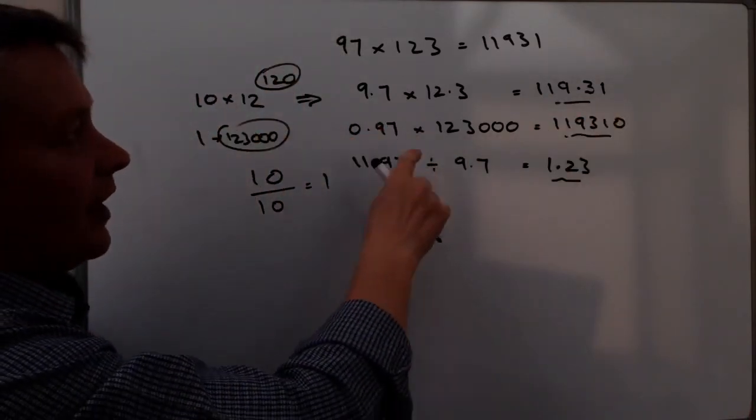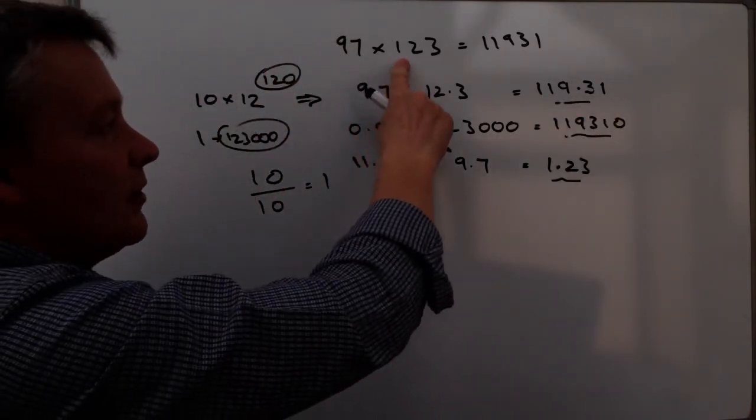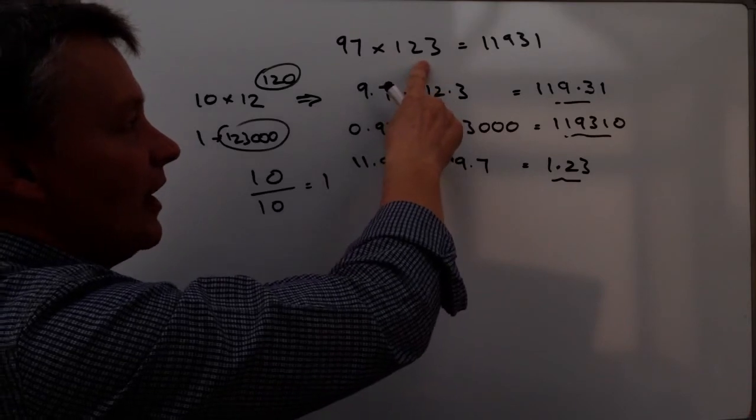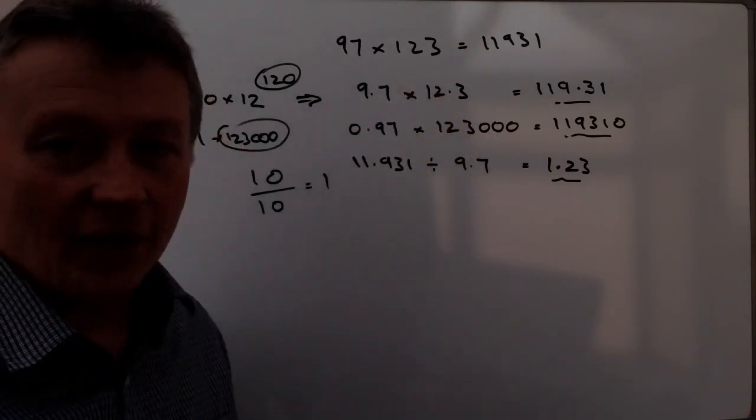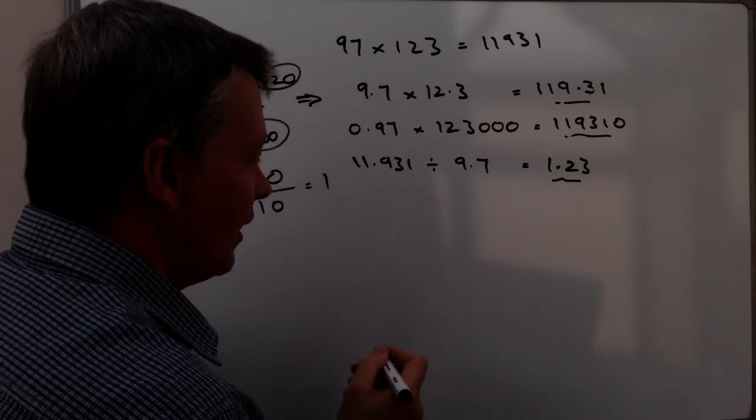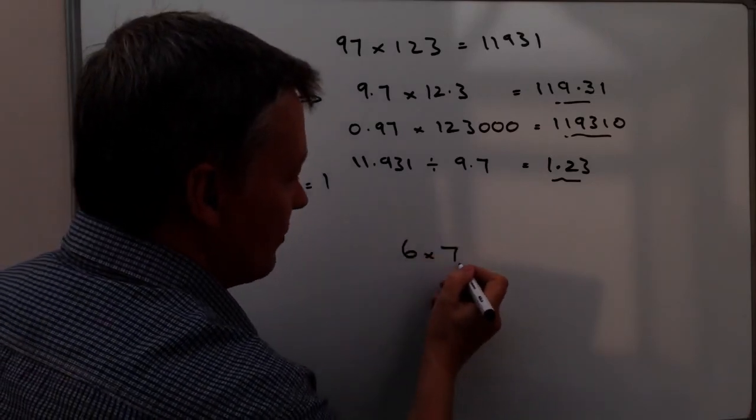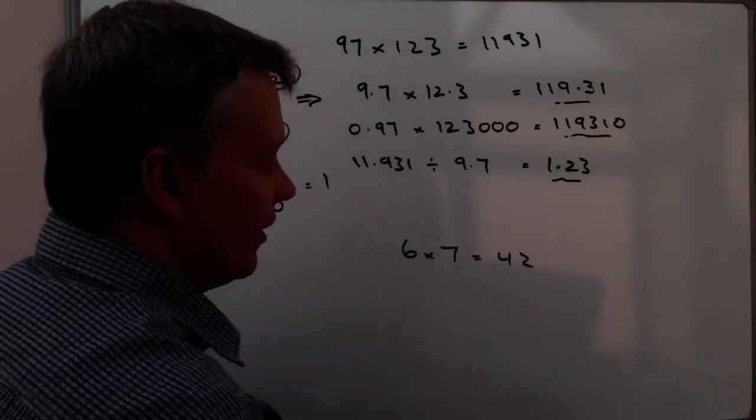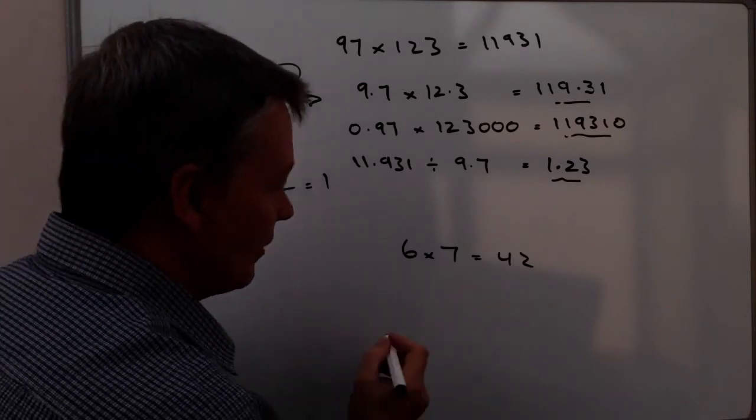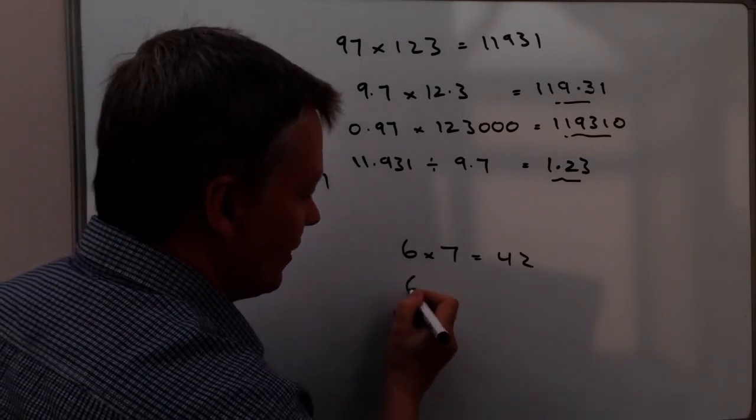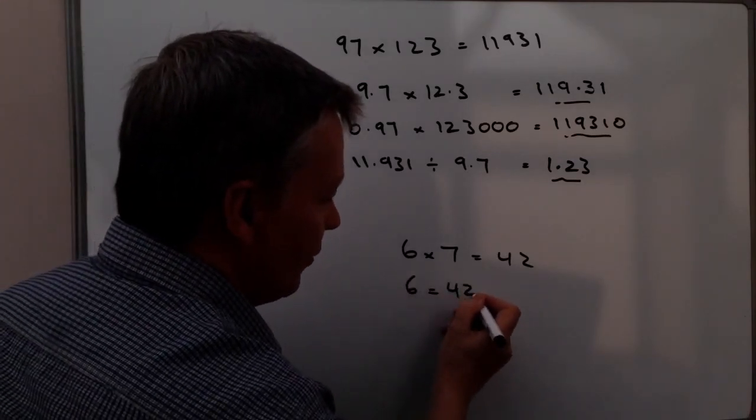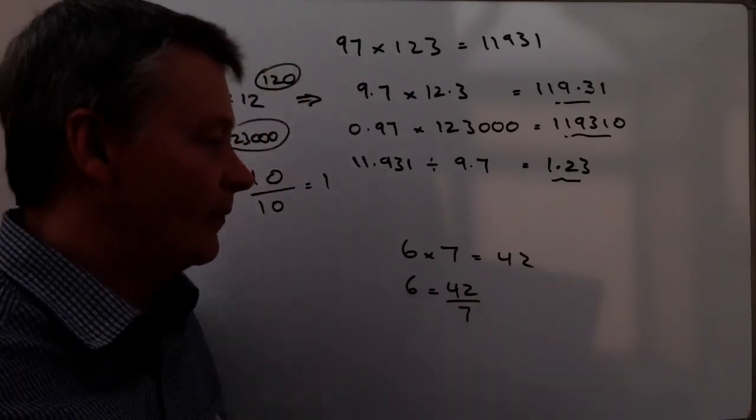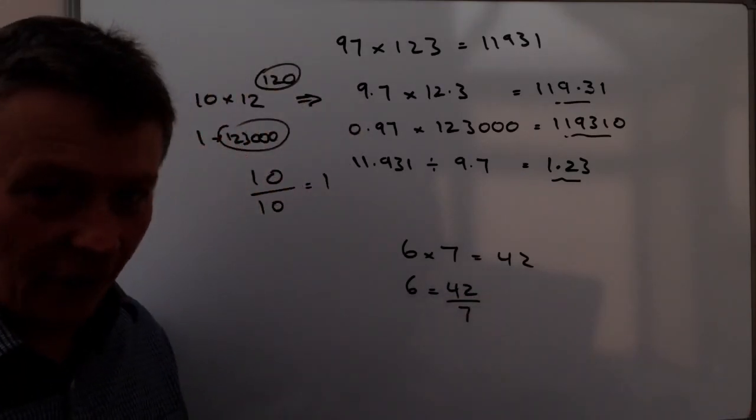Because now we're dividing, we need to use this piece of information here in much the same way as if we were manipulating a number. Let's say 6 times 7 equals 42. That's the same as saying, or we could say that 6 equals 42 divided by 7. I hope that's OK for you.